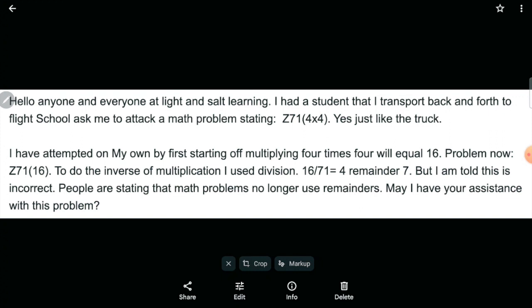So let's look at what he said. He said he attempted on his own by first starting off multiplying four times four will equal 16. And Brandon, I loved that. I see in what you wrote, you wrote Z71 4x4 times 4x4, that we have that little four times four expression. Always in math, if I see something I can simplify, like I know how to simplify four times four, I could start there. It's a great first start. So I like that you did that. I like that you ended up with Z71 times 16.